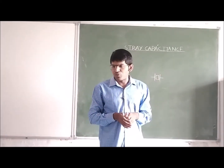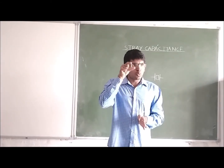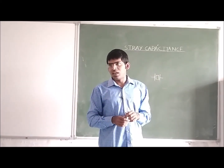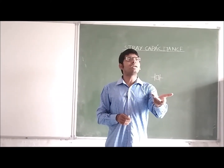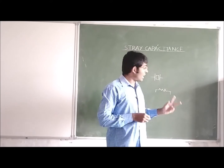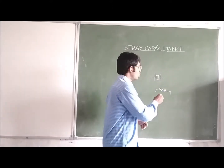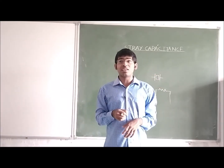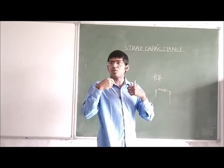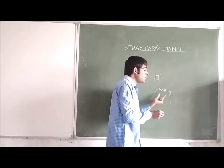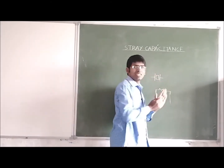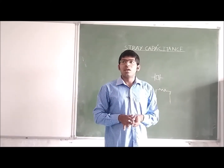Two metallic plates and a dielectric material are required to form a capacitance. If I take two metallic plates and keep a dielectric material between them, then capacitance is formed. If I keep air between those two metallic plates, that is an air dielectric capacitor. When we connect a resistor in the circuit, that resistor has two metallic leads. If we use very long leads, between those two metallic leads there is an air dielectric. So these two leads are behaving like metallic plates, and with air dielectric, this forms capacitance.